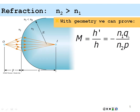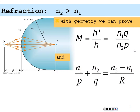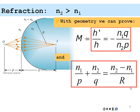The image distance Q in this case will be positive and the object distance P will also be positive, because the object is on the side of the incoming rays and Q is on the side of the outgoing rays. We can also prove for this interface that N1 over P plus N2 over Q is equal to N2 minus N1 over the radius of curvature. So these are two neat little equations for this refracting surface.